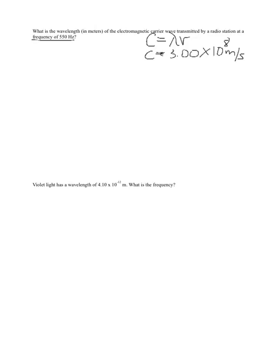So we have a frequency and we know the speed of light. We want to solve for wavelength. So wavelength would be equal to the speed of light divided by the frequency. Wavelength equals c over frequency: 3.00 times 10 to the 8th meters per second divided by the frequency, which is 550 Hz.